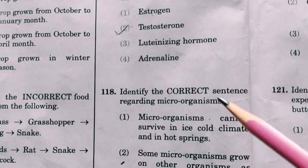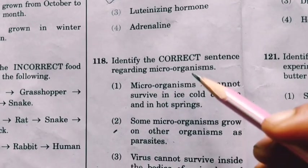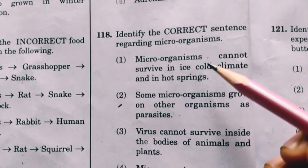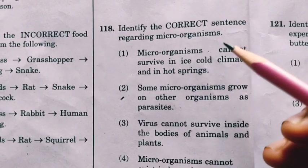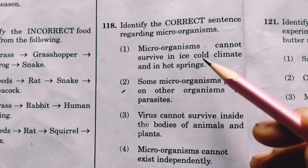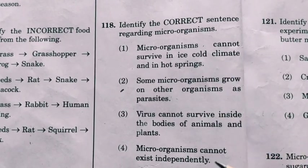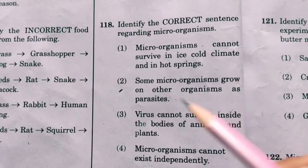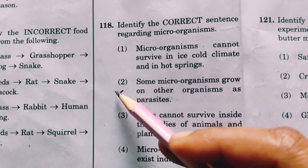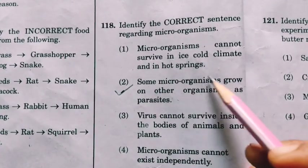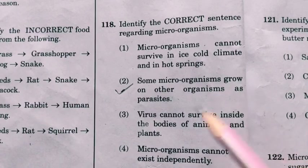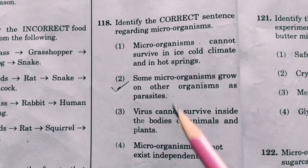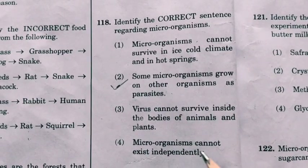Identify the correct sentence regarding microorganisms. Among the given statements, the only correct statement is: some microorganisms grow on other organisms as parasites.